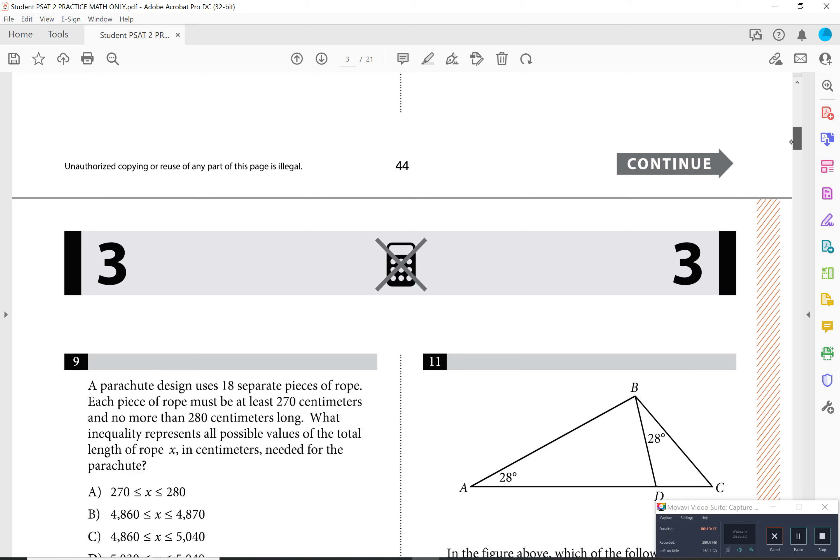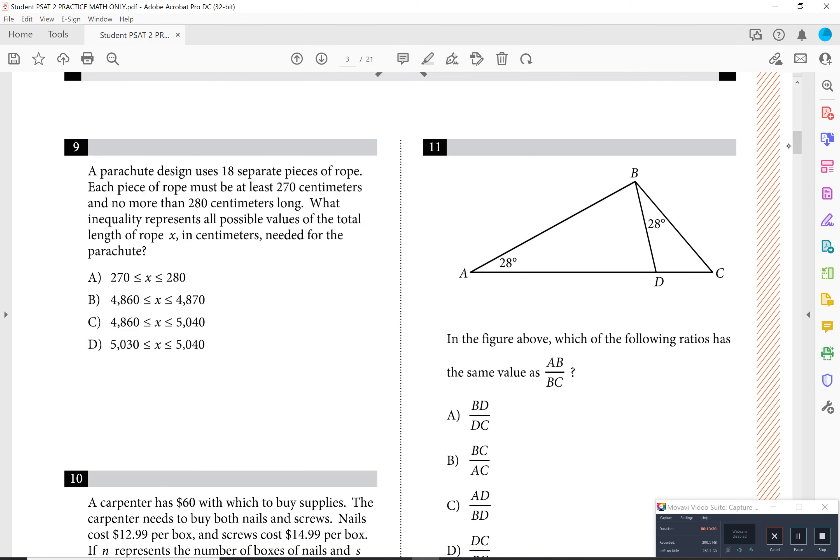Let's look at the next set of questions. We're looking at number nine. A parachute design uses 18 separate pieces of rope. Each piece of rope must be at least, and this is a key word, at least 270. So I'm going to start with 270 times 18 on this side. Centimeters, but no more than 280 centimeters. So 280 times 18 again, because remember, you have 18 pieces of that. And the X value has to fall somewhere in here.